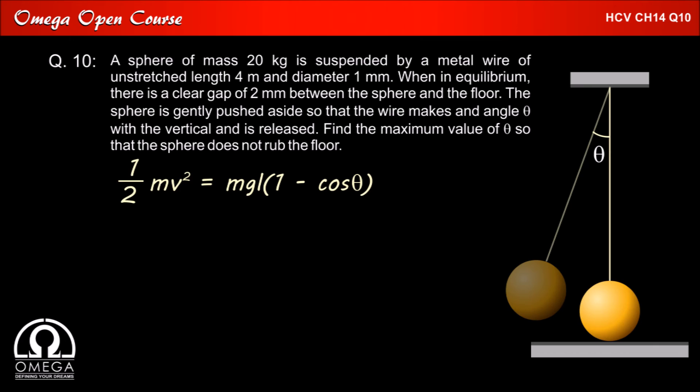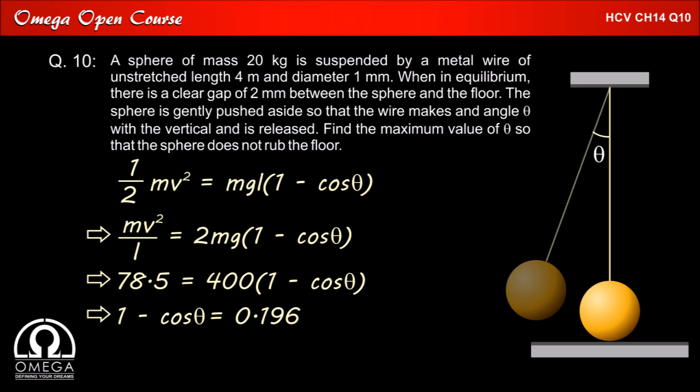Taking 2 to RHS and L to LHS we get mv square by L is equal to 2 mg into 1 minus cos theta. Putting the calculated value of mv square by L that is 78.5 N, mass of the sphere as 20 kg and acceleration due to gravity as 10 meter per second square. We get 78.5 is equal to 400 into 1 minus cos theta which gives 1 minus cos theta is equal to 0.196.